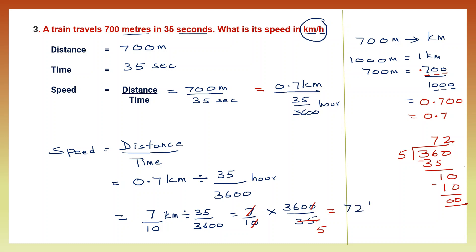We have converted 700 meters in 35 seconds — that speed is 72 kilometers per hour. This is our final answer, the speed in kilometers per hour.